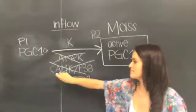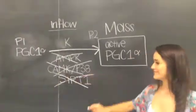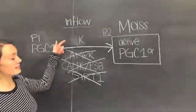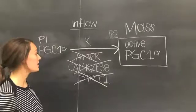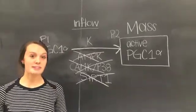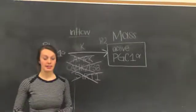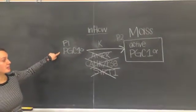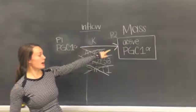As we have shown, these three factors for conductance for inflow to PGC-1-alpha are the same in both lean and obese individuals. Therefore, it must be P1 or PGC-1-alpha content that is contributing to the difference in inflow to active PGC-1-alpha seen between lean and obese individuals after a bout of exercise.